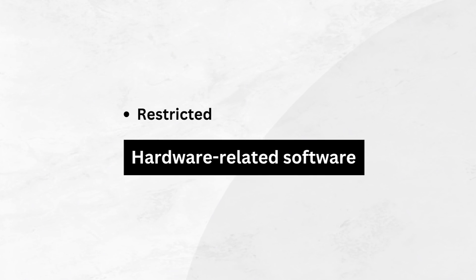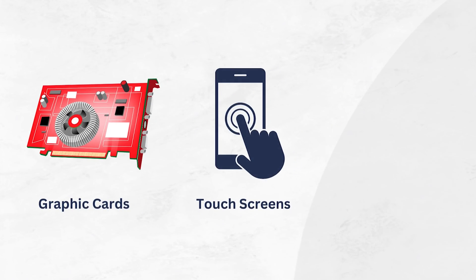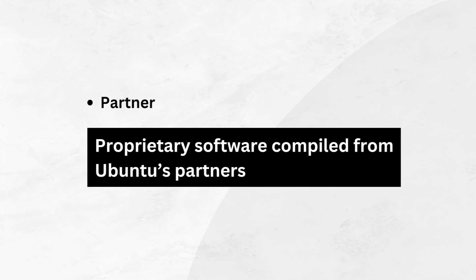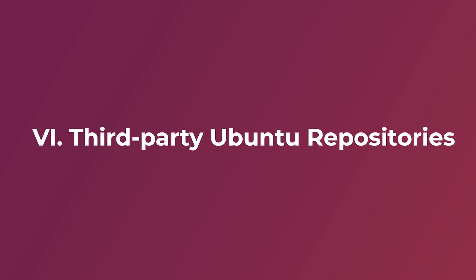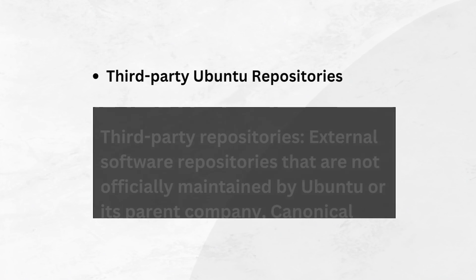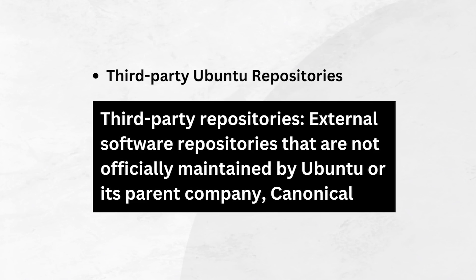The Restricted repository focuses on hardware-related software, especially drivers with special licensing rules — this includes drivers for graphics cards, touchscreens, network cards, and more. The Partner repository consists of proprietary software that Ubuntu has compiled from its partners. Third-party repositories are external repositories not officially maintained by Ubuntu or Canonical, and are created by independent developers, organizations, or communities.